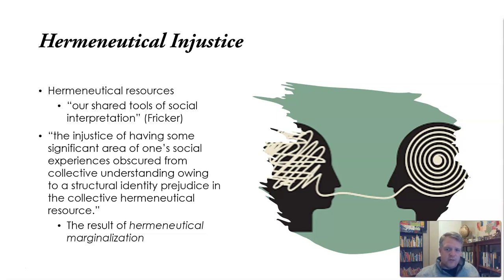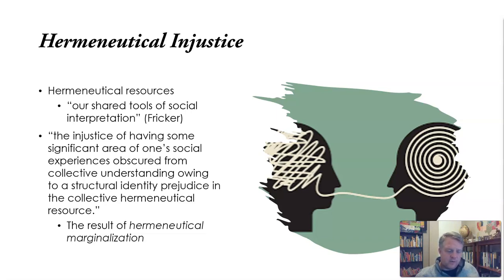If we lack those shared hermeneutical resources, you might not be able to understand something I have experienced when I try to explain it. Or you might have certain resources that you don't allow me to have access to, and so I can't come to make sense of the experiences I'm having because I lack those resources. Fricker defined hermeneutical injustice as the injustice of having some significant area of one's social experiences obscured from collective understanding, owing to a structural identity prejudice in the collective hermeneutical resource.